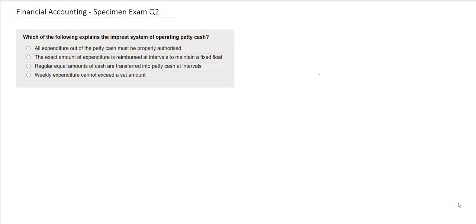In this question, you are being asked to decide which of the following explains the imprest system of operating petty cash. An imprest system is the method of paying out and replenishing the petty cash system, one of its aims...